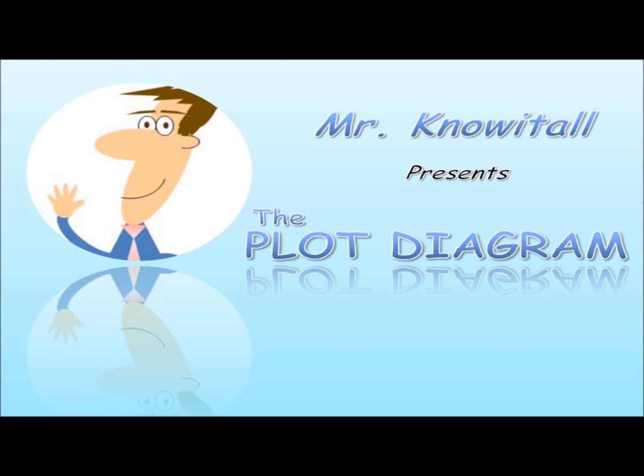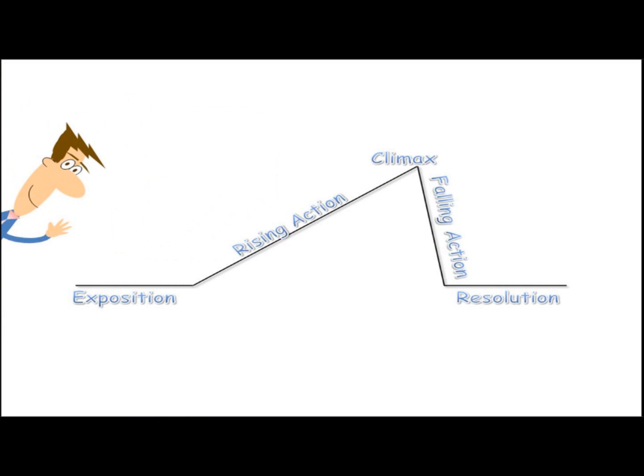Mr. Know-It-All presents The Plot Diagram. There are five parts to a plot diagram: Exposition, Rising Action, Climax, Falling Action, and Resolution.